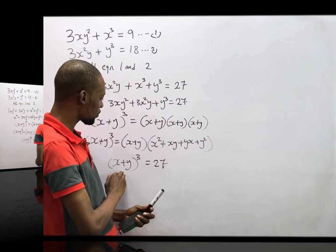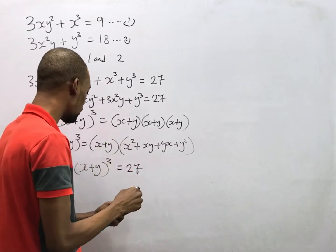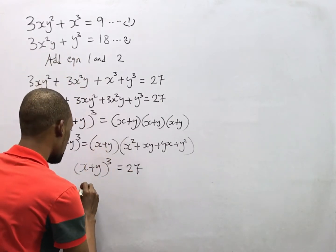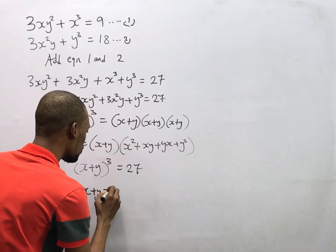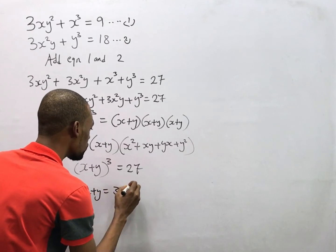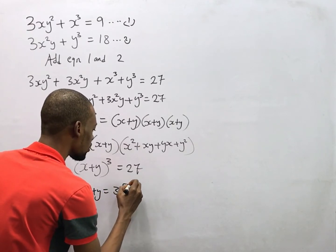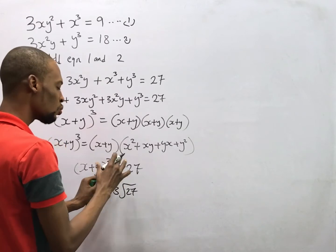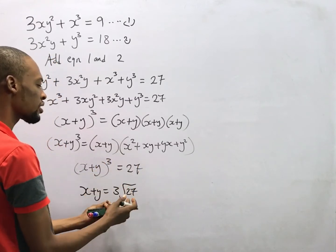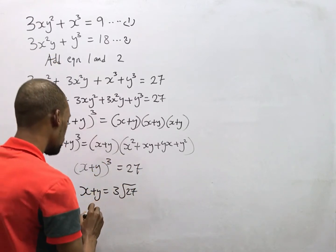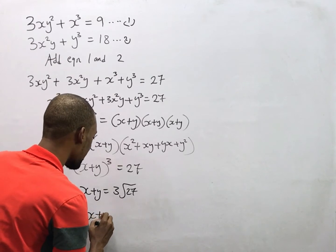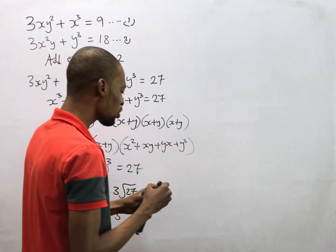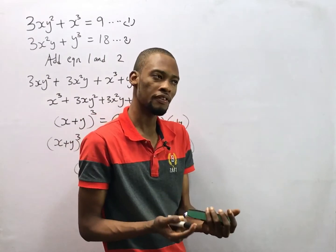So in that case we are left with (s + y)³ = 27. If (s + y)³ = 27, it therefore implies that s + y equals the cube root of 27, because to remove a cube we take the cube root of both sides. So s + y = 3, because the cube root of 27 is 3.